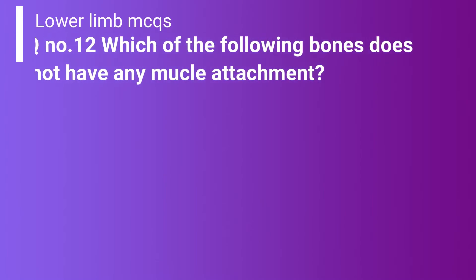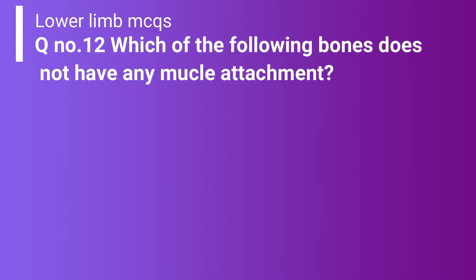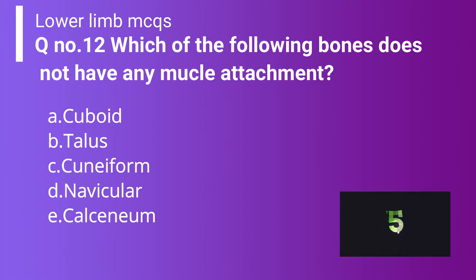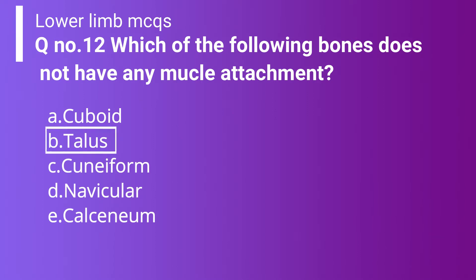Question number 12: Which of the following bones does not have any muscle attachment? Option A: cuboid. Option B: talus. Option C: cuneiform. Option D: navicular. Option E: calcaneum. The correct answer is option B, talus, because it does not have any muscular attachment, as shown in the figure.